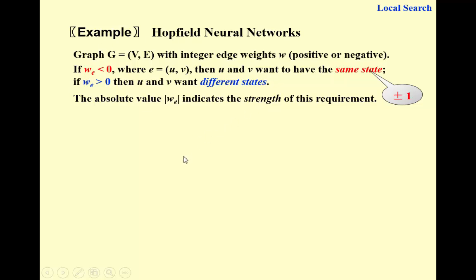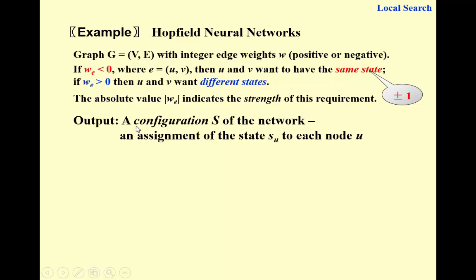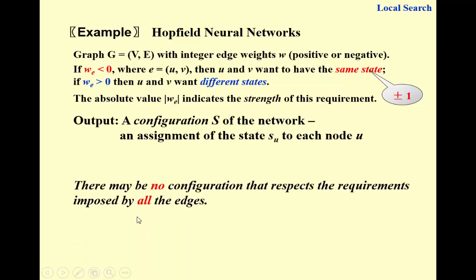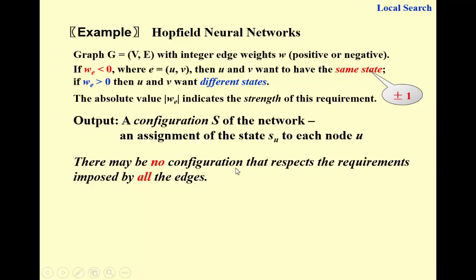This is the input. The output is a configuration s of the network — an assignment of states s_u to each node u, where s_u is either positive 1 or negative 1. But the key problem is that for any graph, there's no guarantee of a solution. There may be no configuration that respects the requirements imposed by all the edges.